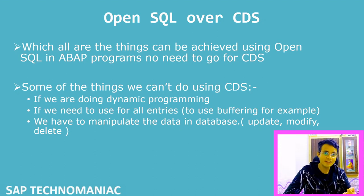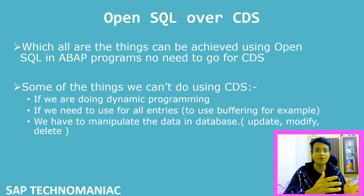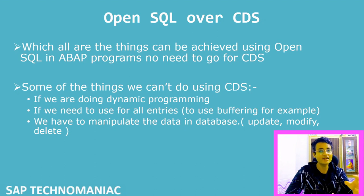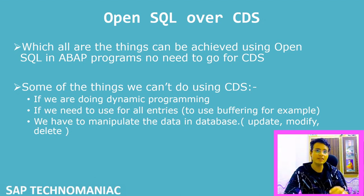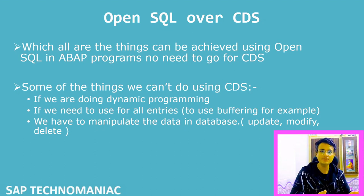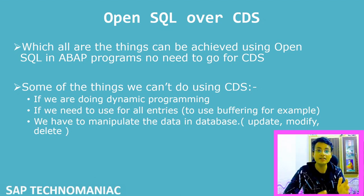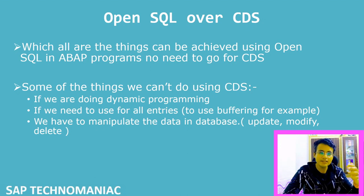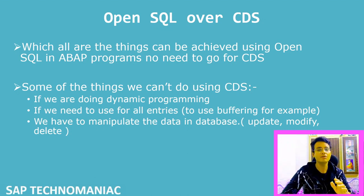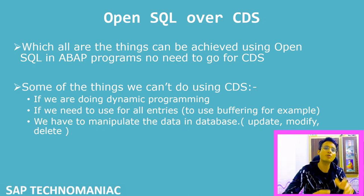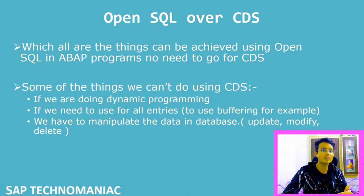Apart from that, if you want to use FOR ALL ENTRIES — you might say I can use JOIN in CDS, why use FOR ALL ENTRIES. But sometimes when you're creating a join between two tables and one table is buffered at the database level, you need to get data from the buffer table and hit the database for the other. In that case, you can use FOR ALL ENTRIES. If you make a join and hit the database, the buffer data available on the application server will not be accessed, and you'd be unnecessarily going to the database for data already available on the application server.